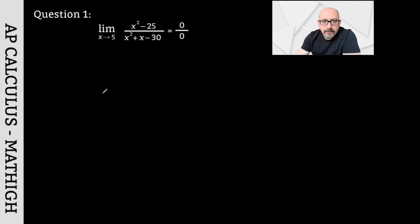Our first question is the indeterminacy of 0 divided by 0. When you substitute 5 for x, the top part, 25 minus 25, is 0. The bottom part also makes 25 plus 5, which is 30. It's coming from negative 30 to 0, so let's factor it.